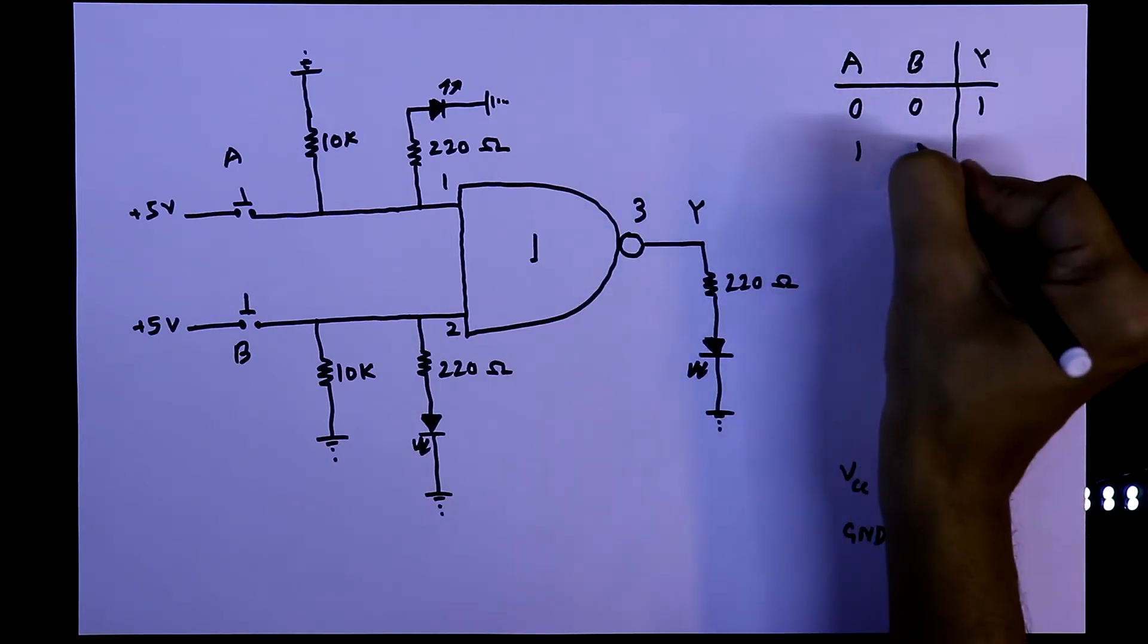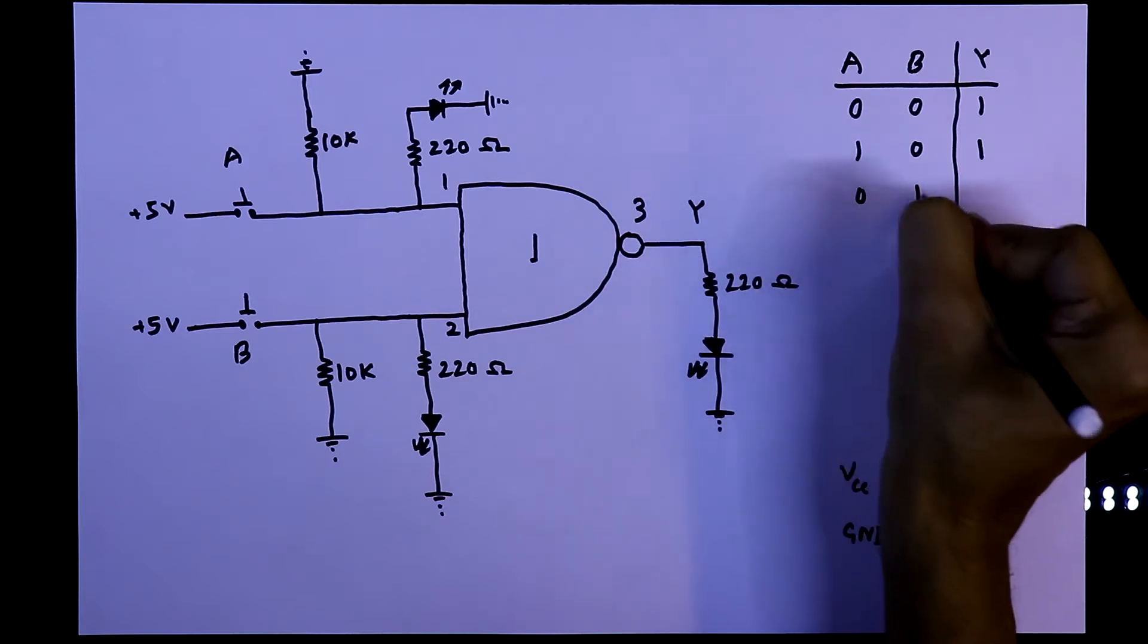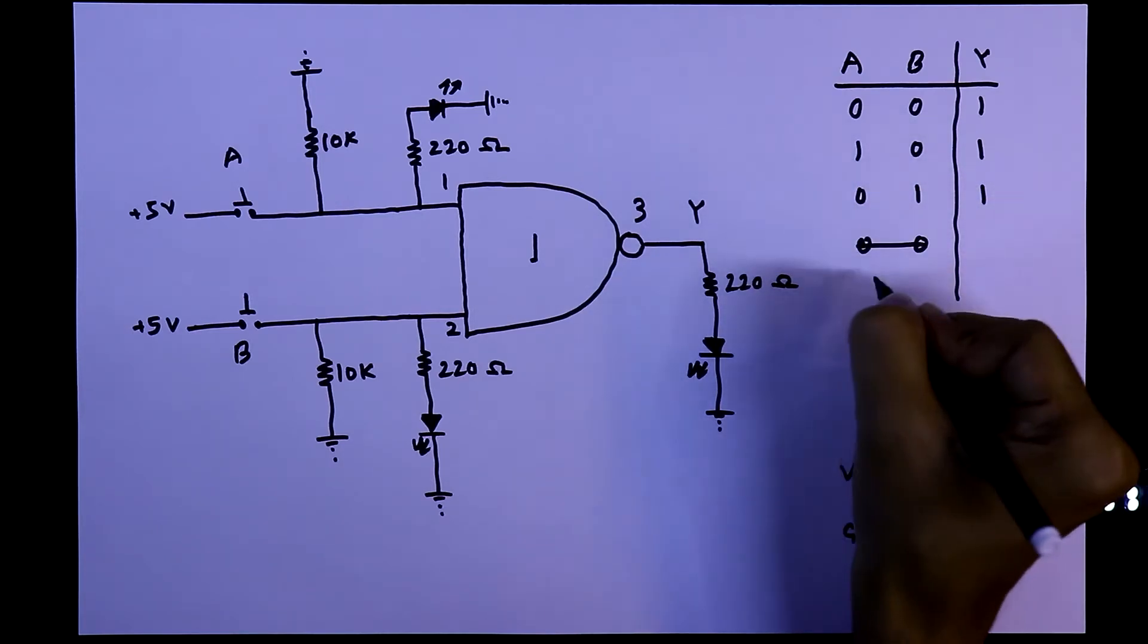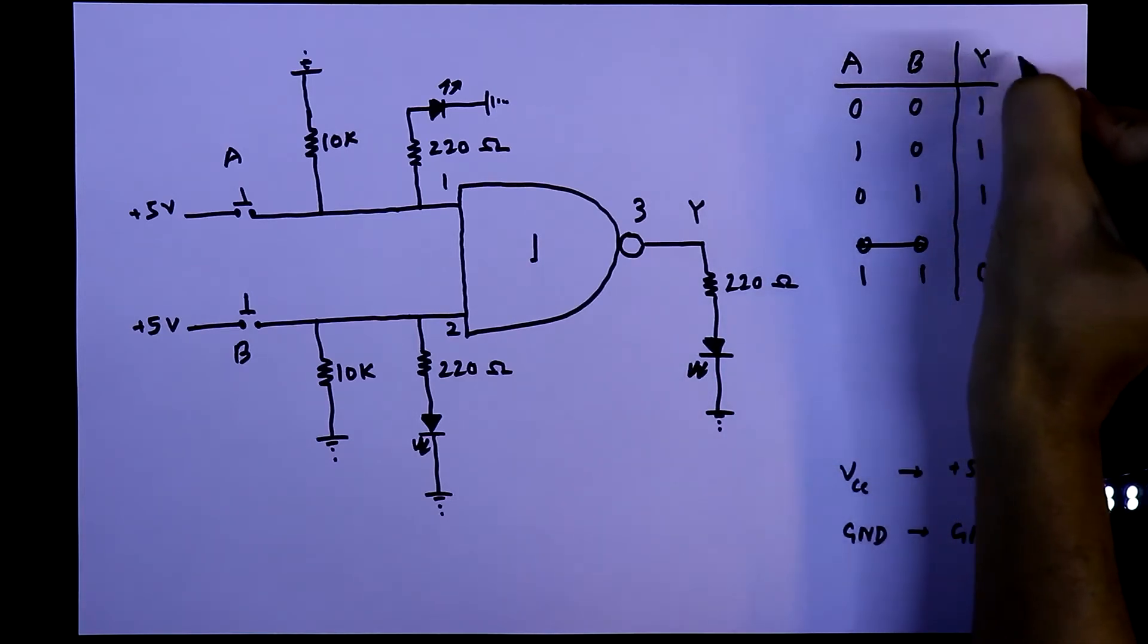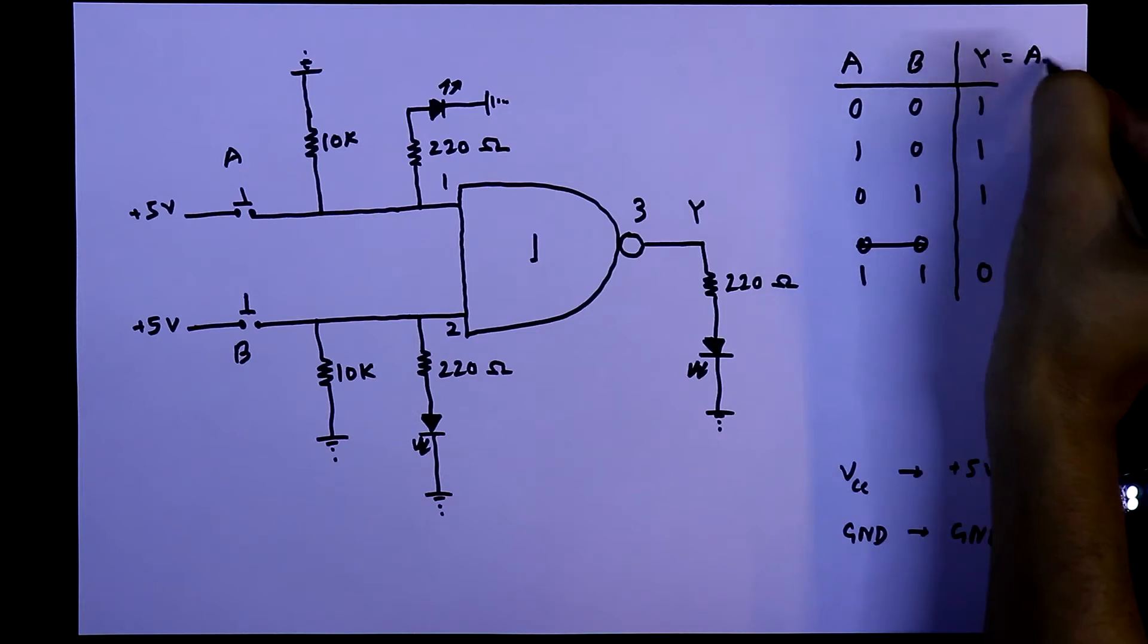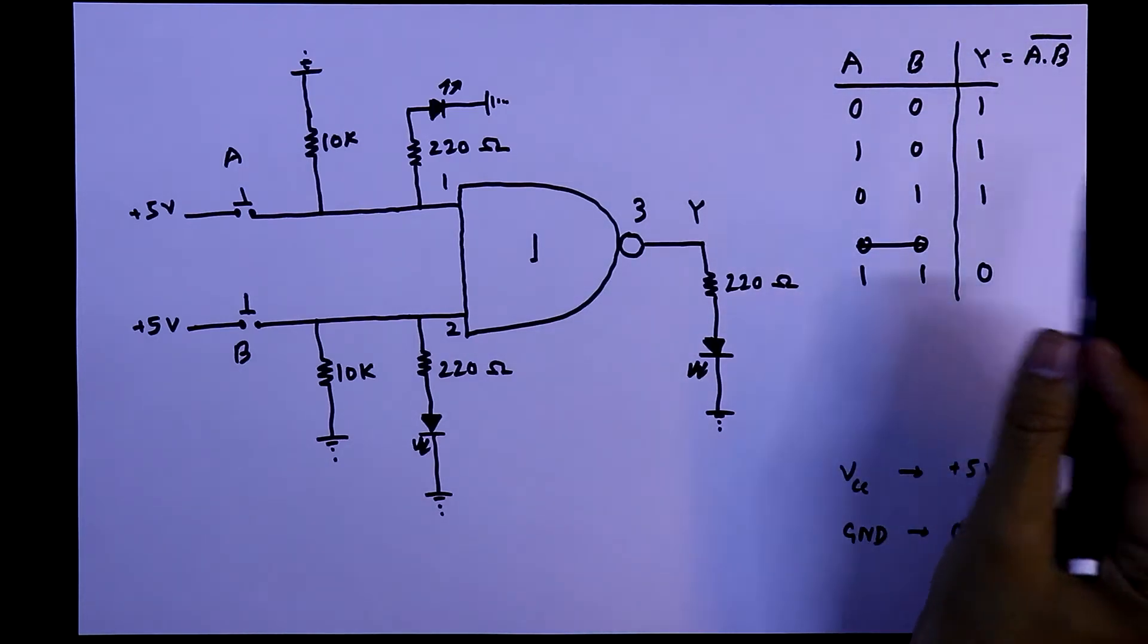When inputs are 1, 0, output will be 1. When inputs are 0, 1, output will be 1. When both the inputs are 1, then only our output will be 0. And we can write Y equal to A dot B inverse.